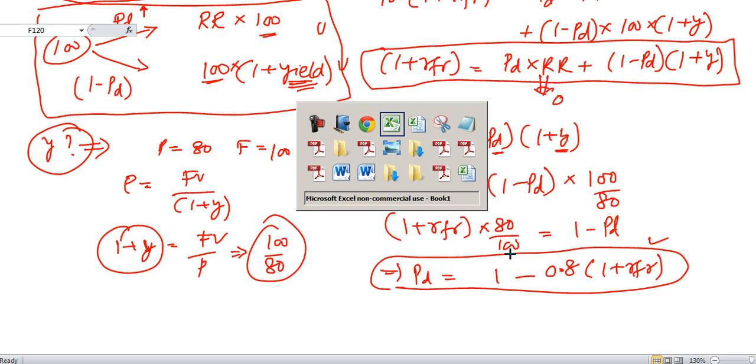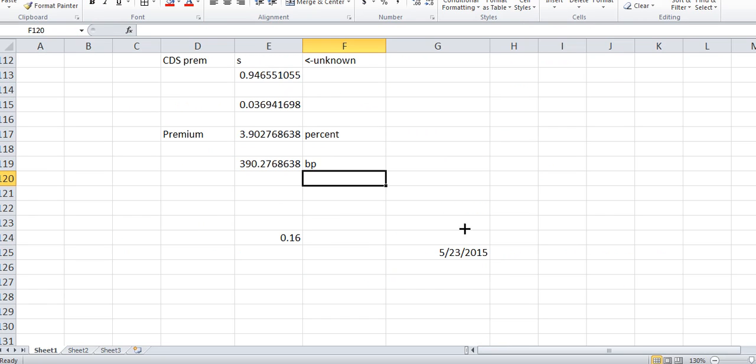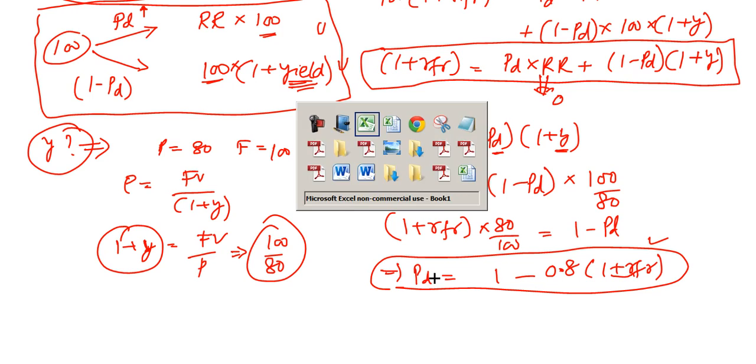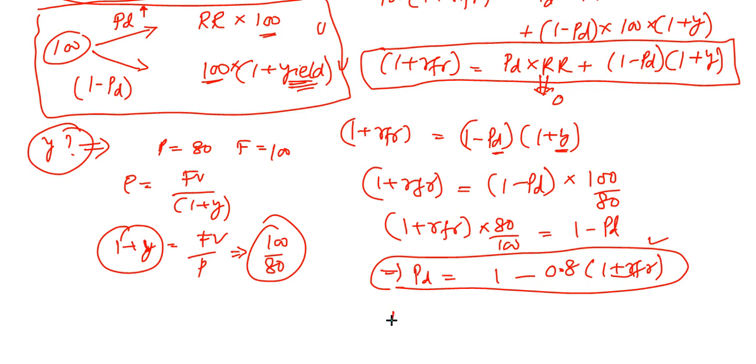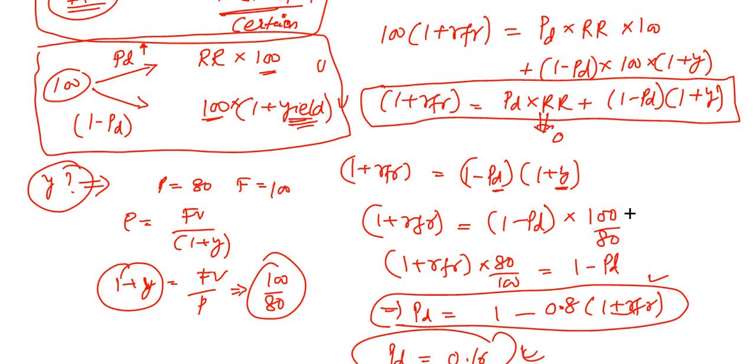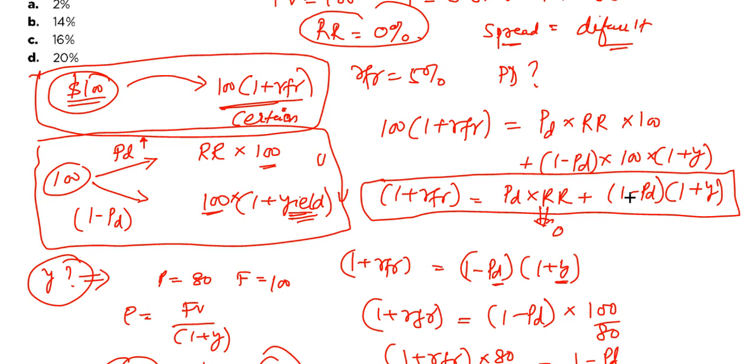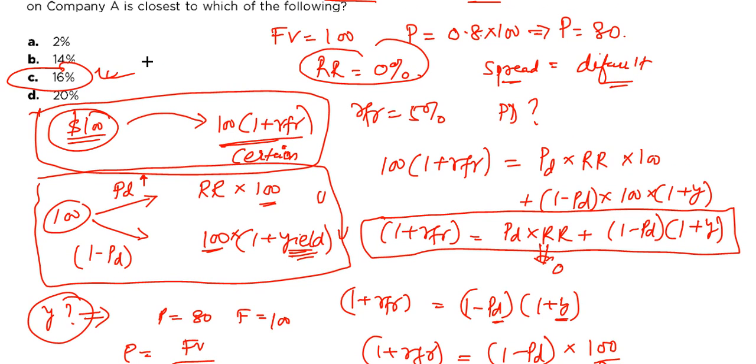Now I have solved this same thing in your excel also. So what we have is we have 1 minus 1.05. This is 1.05, 1 plus RFR into 0.8. It comes to be 0.16. So the probability of default is 0.16. So this will be your answer and here if you see, the answer should be option C that is the probability of default.